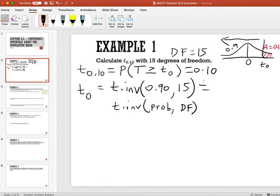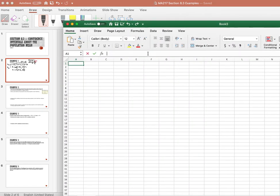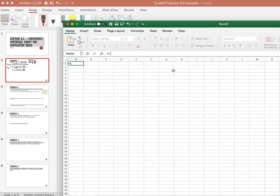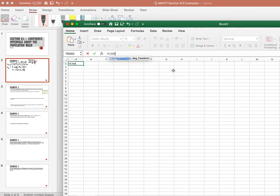Then we need to put that into Excel to find our value. To open up an Excel sheet, we would type in the function bar equals T.INV of 0.90, comma, 15.